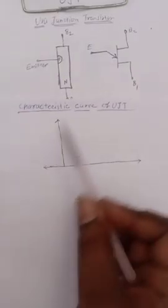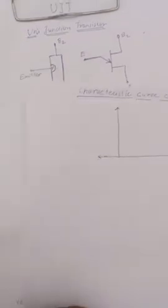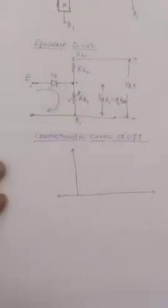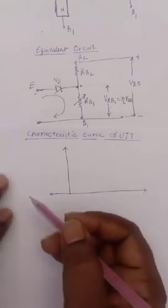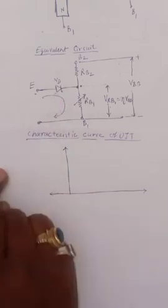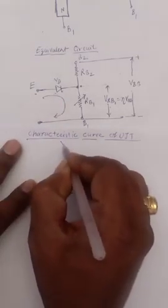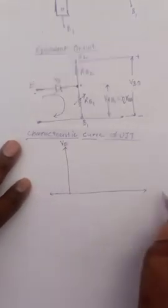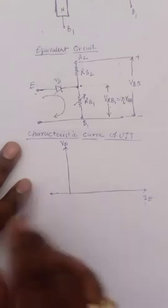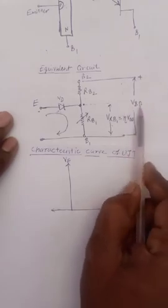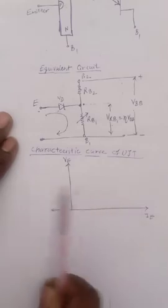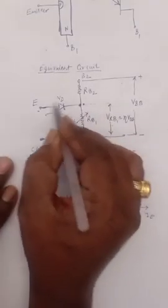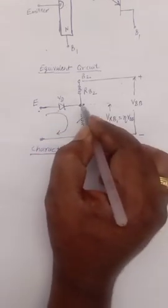Now we are going to see the characteristic curve of the UJT using the same diagram. We plot emitter voltage VE on the y-axis and emitter current IE on the x-axis. If we apply a fixed voltage VBB and vary the emitter voltage, we observe the relation between VE and IE. We consider the voltage at the cathode of the diode, which is VRB1 — a positive voltage calculated using the voltage divider formula.